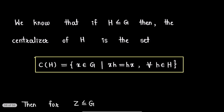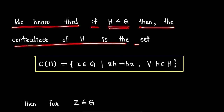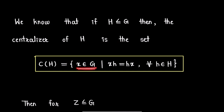Now the question asks us to determine whether we can recognize the center of group G as the centralizer of some subgroup of G. We recall the definition: if H is some subgroup of G, then the centralizer of H is the set of all elements x in G such that those elements commute with all elements in subgroup H. This is the definition of the centralizer of a subgroup of G.